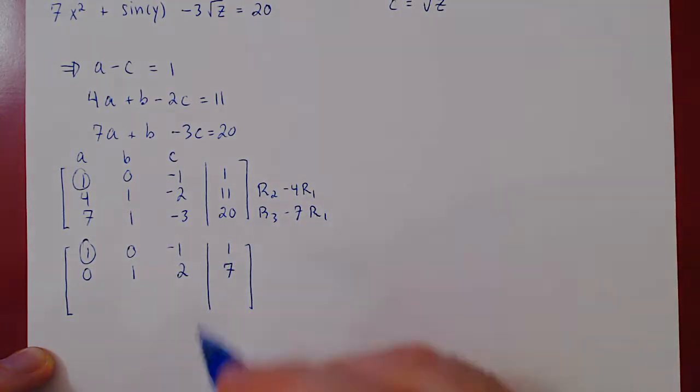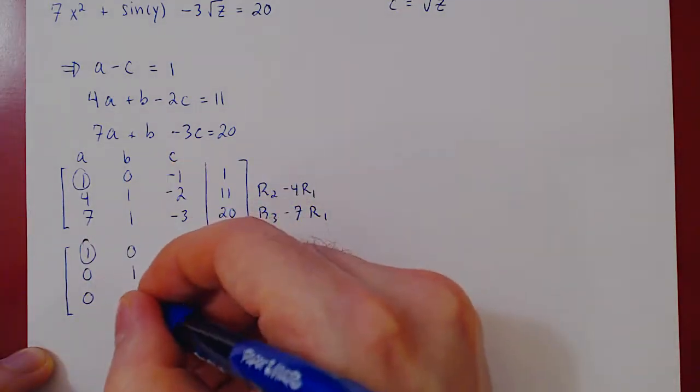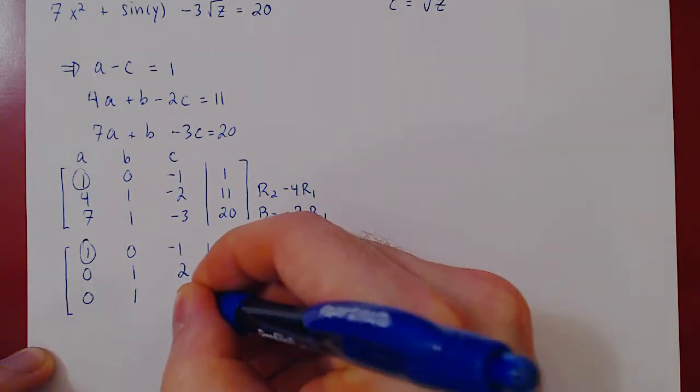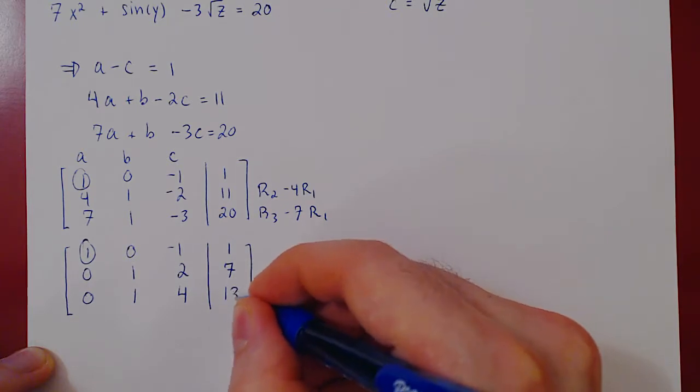Second row operation. 7 minus 7 is 0. 1 minus 0 is 1. Negative 3 minus 7 times negative 1 is plus 7, so it's positive 4. 20 minus 7 times 1 is 13.